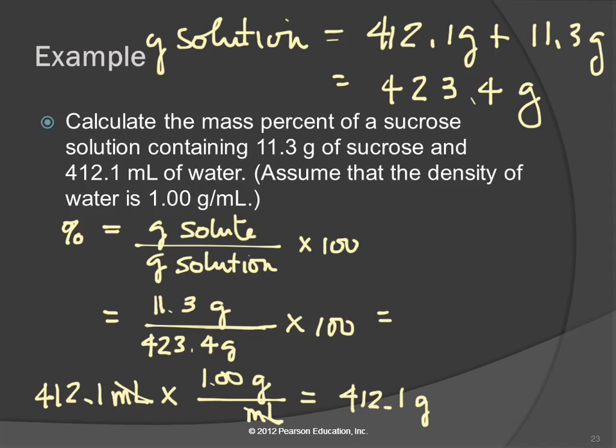Times 100. 11.3 divided by 423.4 times 100. I'm going to round off to three significant figures because 11.3 has three significant figures. And so I'm going to get 2.67%.